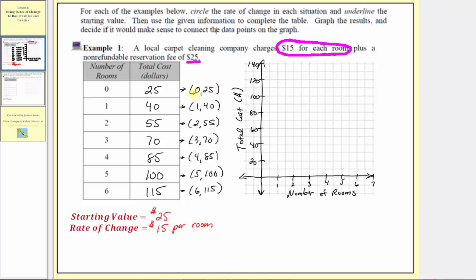The first ordered pair is (0, 25): input of zero, go up 25 units on the vertical axis. Next is (1, 40): input of one, output of 40. Then (2, 55): input of two, output of 55. Then (3, 70): input of three, output of 70. Then (4, 85): input of four, output of 85. Then (5, 100): input of five, output of 100. And finally (6, 115): input of six, output of 115.